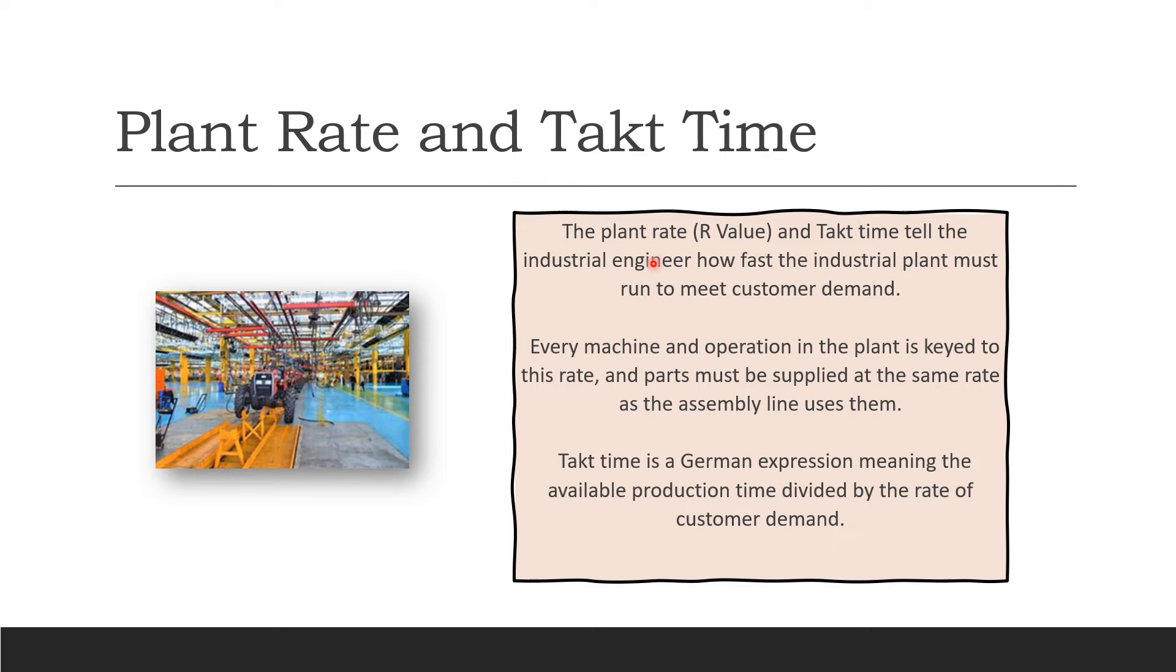Plant rate and takt time. These tell the industrial engineer how fast the plant is going to go to meet customer demand. Every machine and operation in the plant is keyed to that rate. Parts must be supplied at the same rate as the assembly line uses them. Takt time is a German expression. Germans are very smart and want to control everything.